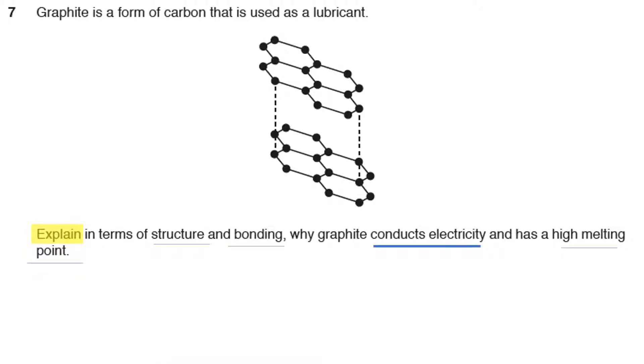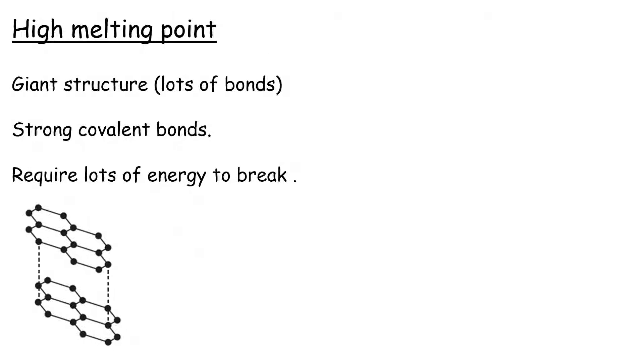So here we are: graphite is a form of carbon, explain in terms of structure and bonding why graphite conducts electricity and has a high melting point. Okay right, let's write a plan for that bit shall we? So one: the high melting point. So here we go—in the margins, on a scrap piece of paper, just jot some ideas down. Now I know it's a giant structure, it's a giant covalent structure. I can see you can get that from the question—it says it's carbon bonds carbon, that's non-metal, it's got to be covalent right?